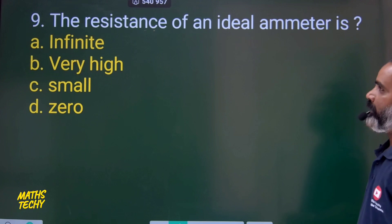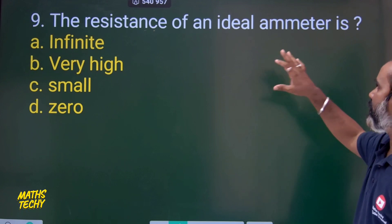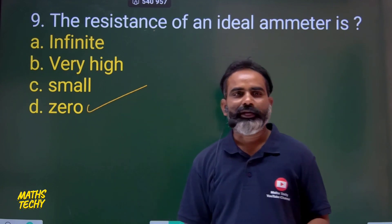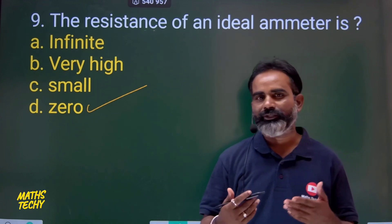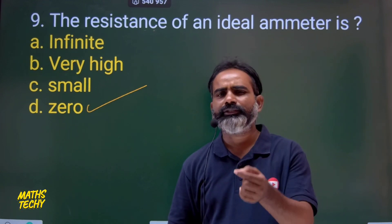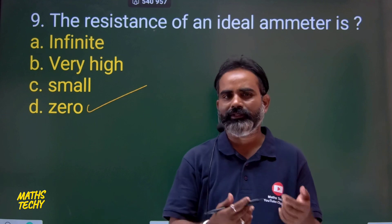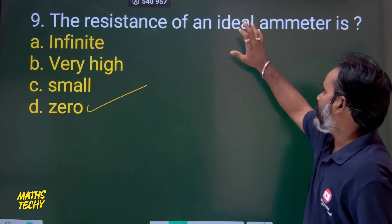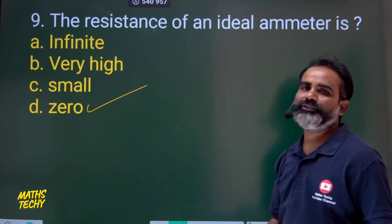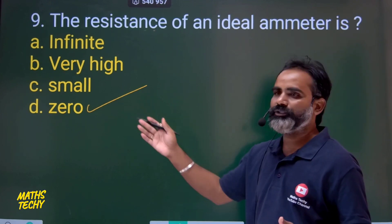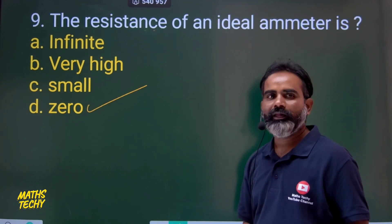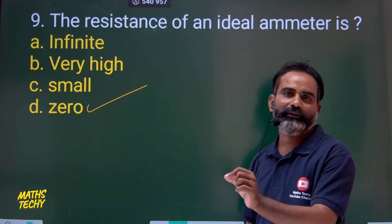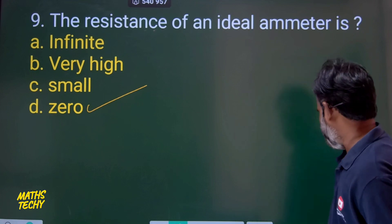Question 9: The resistance of an ideal ammeter is zero. Practically a conductor has some resistance, but ideally we consider it zero so it introduces the least error in the circuit. So the resistance of an ideal ammeter is 0. Also, as a comment-section question: what is the resistance of an ideal voltmeter?